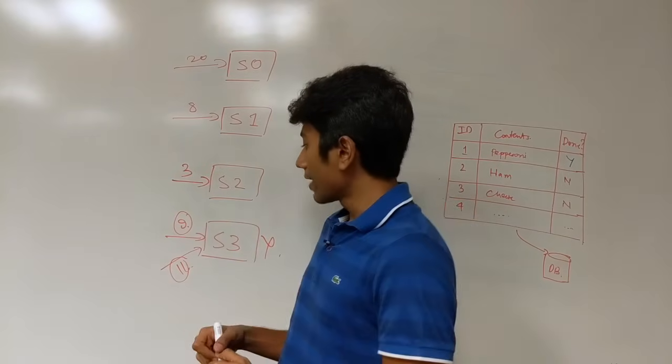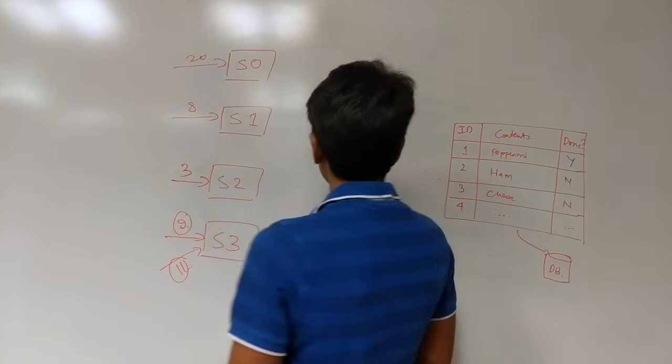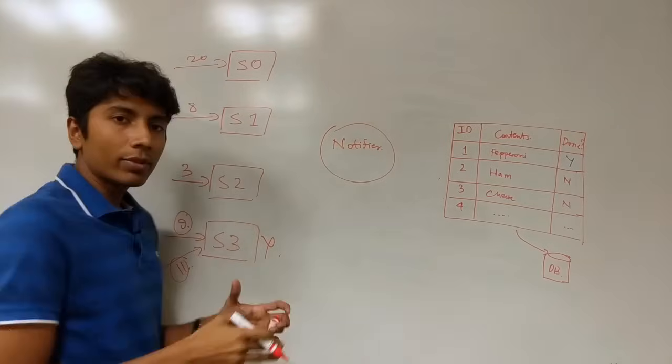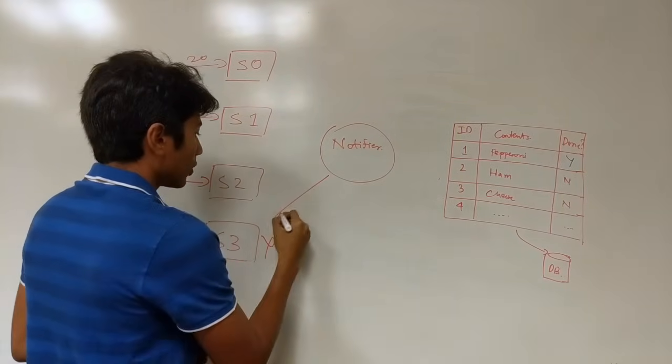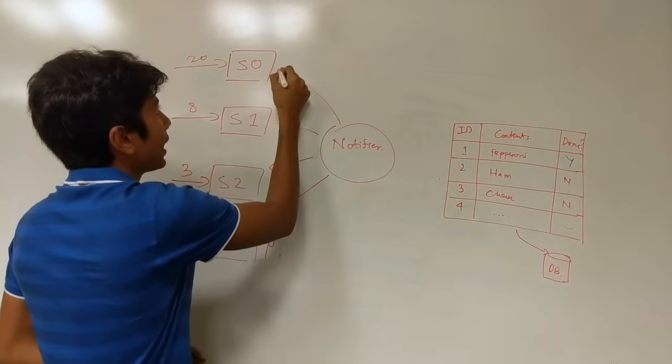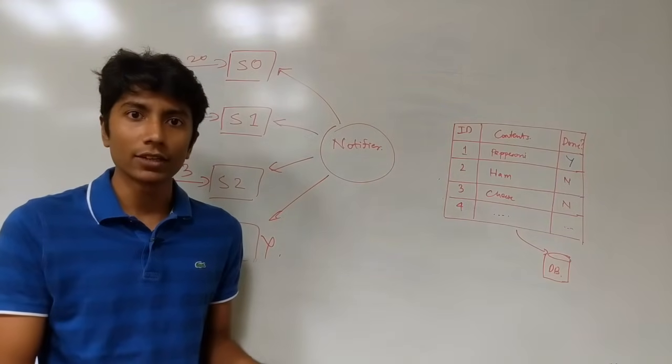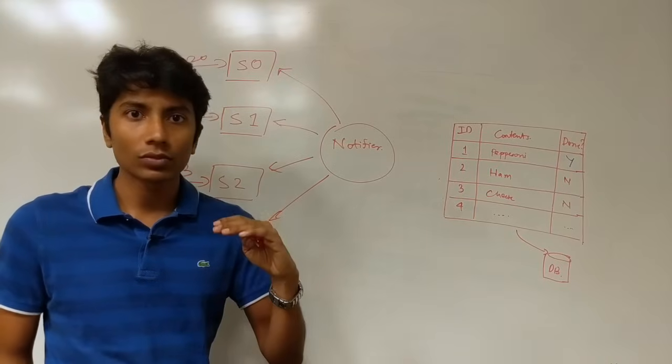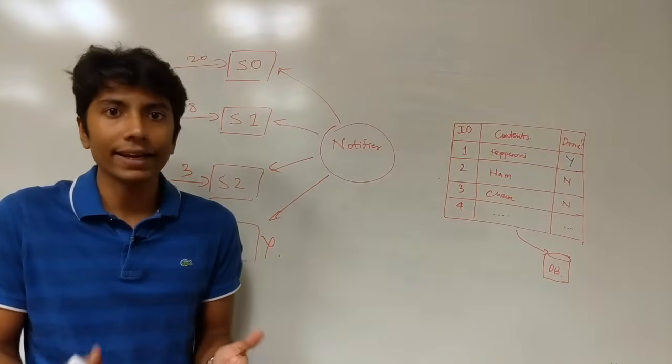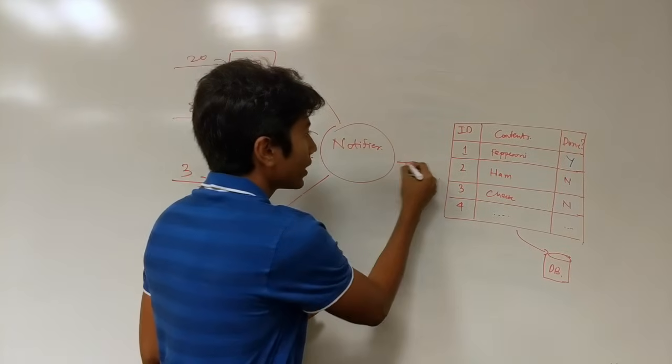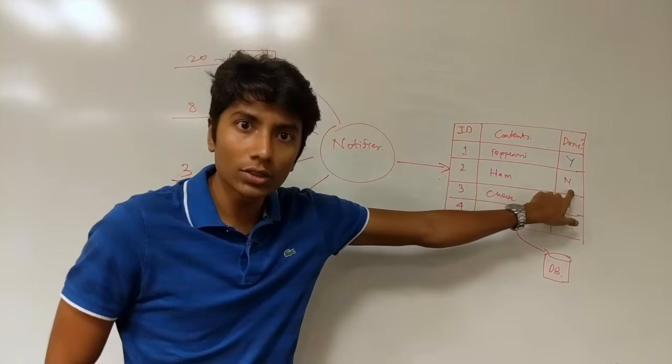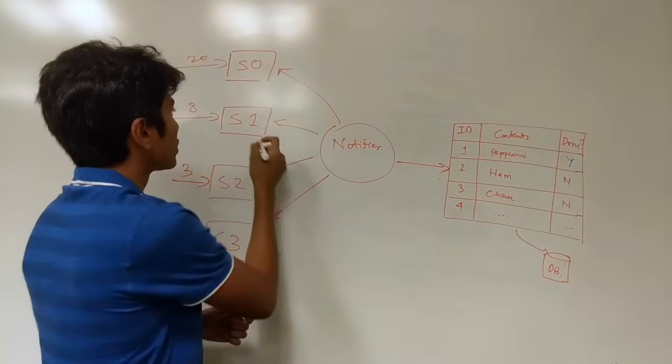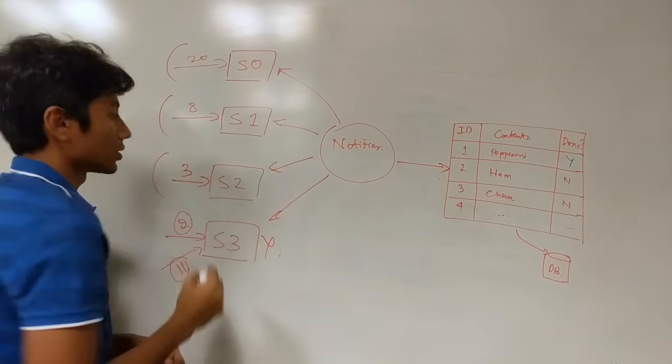So instead what you could do is have some sort of a notifier. So that is going to be checking for a heartbeat in each server. So it talks to each server and asks them if they're alive every 10 seconds, every 15 seconds. What happens with that is if a server does not respond then the notifier assumes that that server is dead. If it is dead it can't handle orders and then it can query the database to find all of those orders which are not done. Once it distributes them to these three remaining servers.